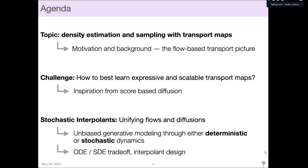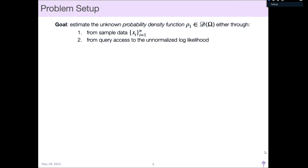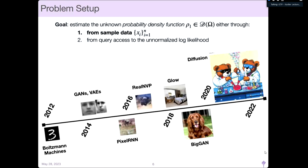What I hope to do is take the transport picture and the diffusion picture and unify them together in what we're calling stochastic interpolants. We'll get an unbiased generative modeling paradigm that allows either deterministic or stochastic processes for generation. We'll discuss the trade-off between deterministic and stochastic processes and ways to design these stochastic interpolants for different goals. The problem setup: the goal is to estimate an unknown probability density function ρ₁ from sample data.